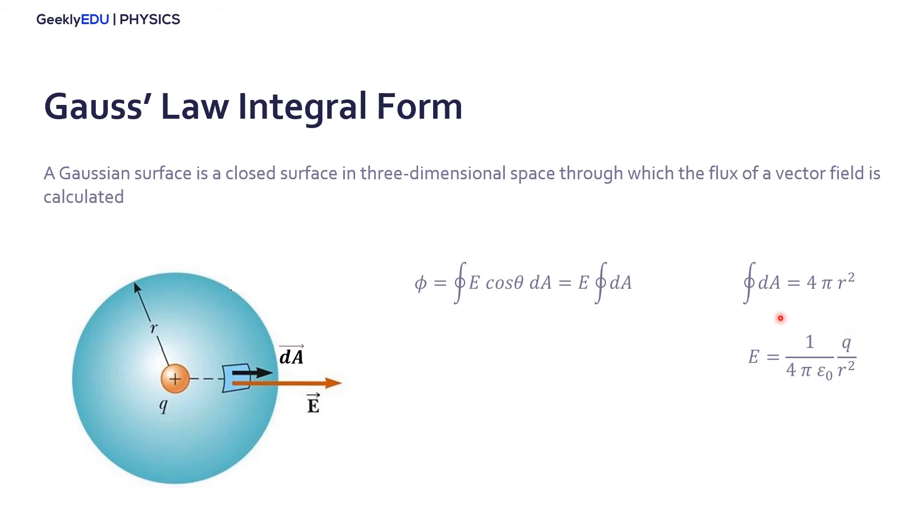So now we have the electric field and the integral of dA, and we want to calculate the flux. We can just multiply both and cancel this 4 pi and r squared. And it leaves us with the formula I presented you before, that the electric flux is Q, the charge over the permittivity of free space.